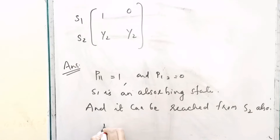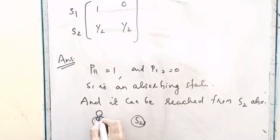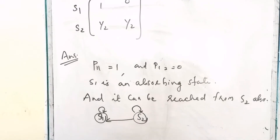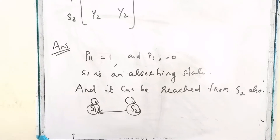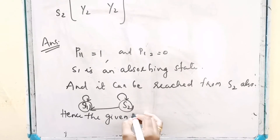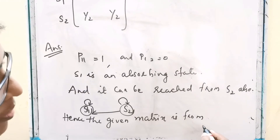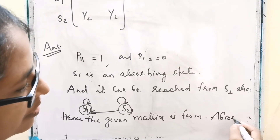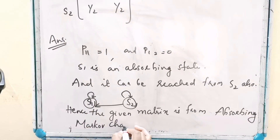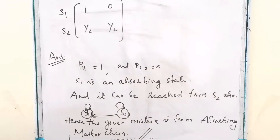From the diagraph it is clear: S1 to S1 is possible, S2 to S1 is possible, and S2 to S2 is also possible. Hence the given matrix is from an absorbing Markov chain.